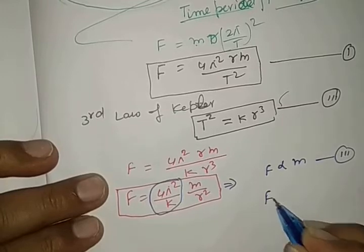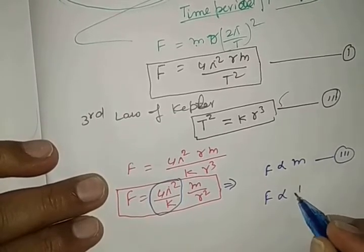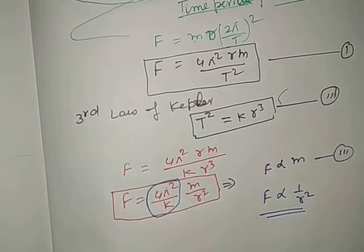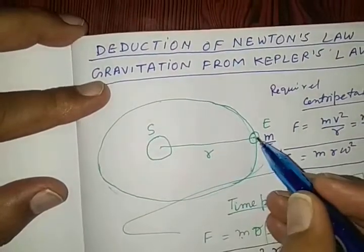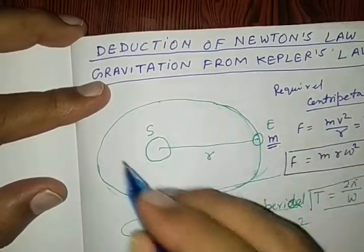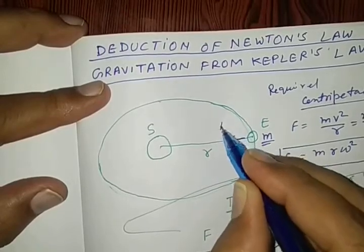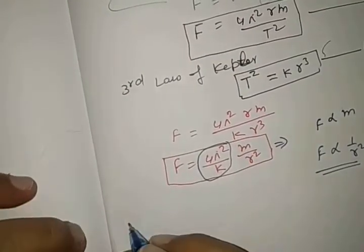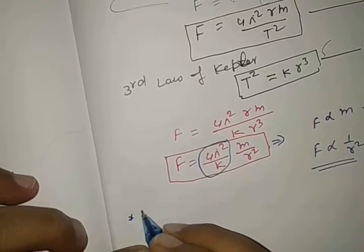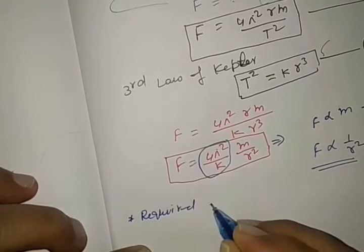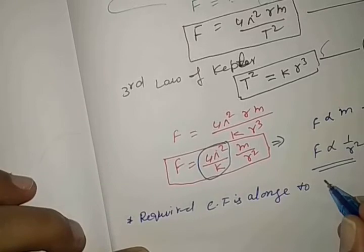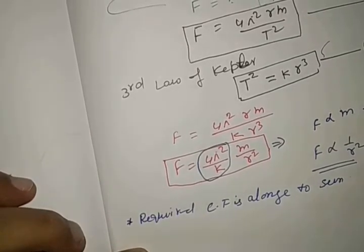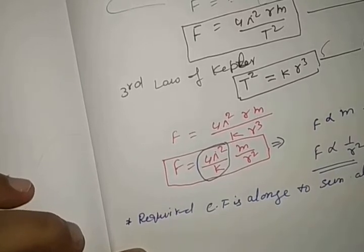And this required centripetal force is also inversely proportional to 1 by r square. So, by this mathematical calculation, we may obtain 3 important results. The centripetal force, which is required to revolve around the sun, is towards the sun. So, first fact is, required centripetal force is along to sun always, along to sun always.